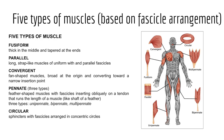Our last type of muscle is the circular muscle, sometimes known as sphincters. These are a common arrangement found associated with body openings where fascicles are arranged in concentric circles. Examples include the orbicularis oris, the muscle associated with our mouth and lips, and the orbicularis oculi, the muscle in the eyelids whose main function is to close the eyelids.